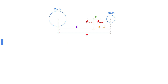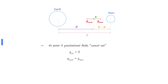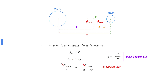From the given distances, we can derive that the distance between the moon and point X is large D minus small d. At point X, the gravitational fields due to the Earth and Moon cancel out, meaning the net gravitational field strength is zero. This means the gravitational field strength due to the Earth equals that due to the Moon. Use the equation for gravitational field strength from the data booklet, insert the relevant distances, and cancel out the gravitational constant to find your answer.